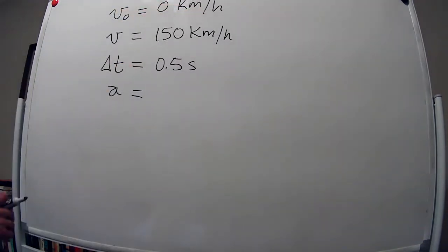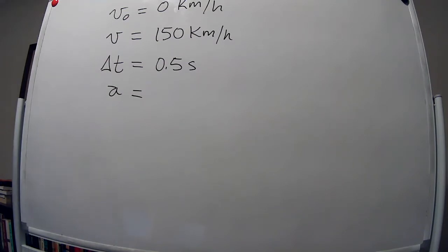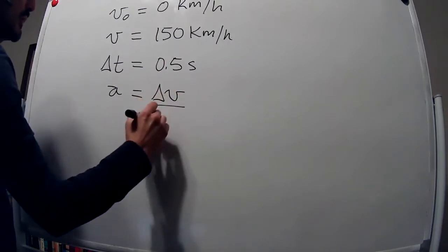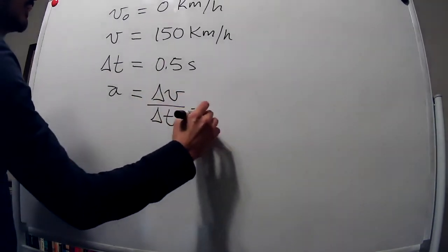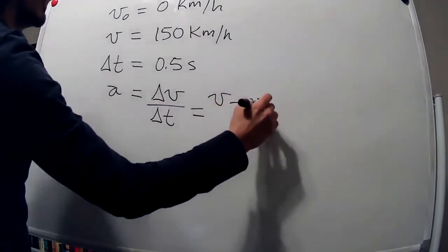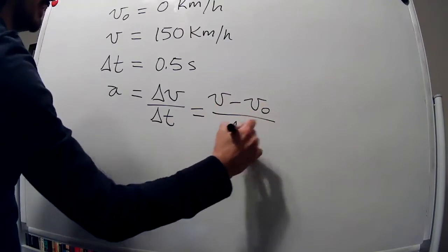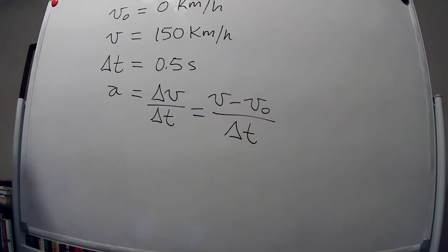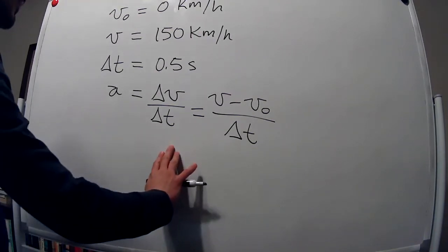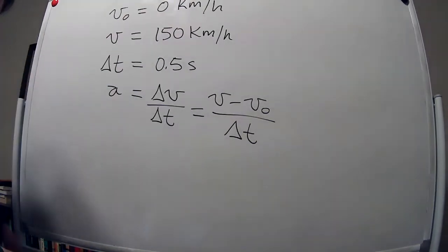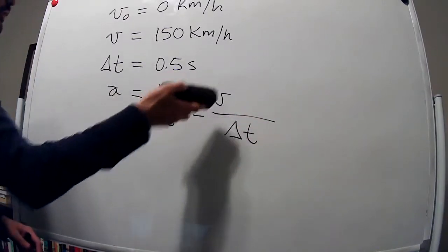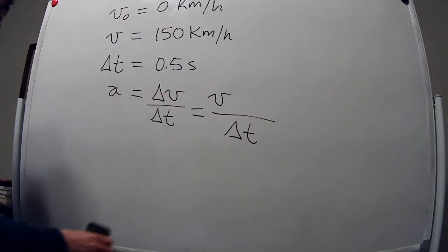This is as simple as they come. The definition of acceleration is the change in velocity divided by the change in time — that is, the final velocity minus initial velocity divided by the change in time — and we have all the ingredients we need. The initial velocity is zero, so we can ignore it. It's just the final velocity divided by the time.